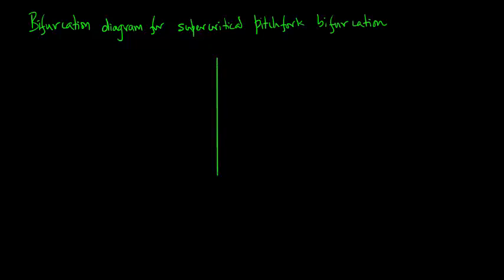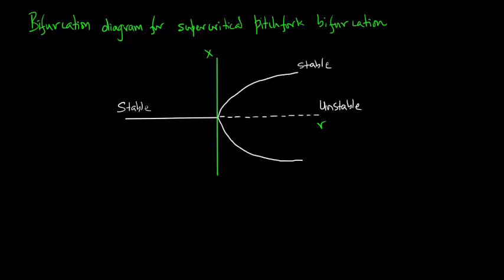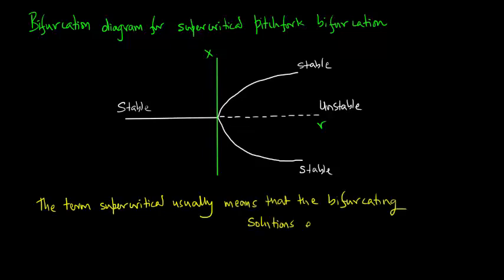Now let us consider the bifurcation diagram for a supercritical pitchfork bifurcation. As is the norm we go ahead and plot x versus r. The straight line is stable and the dashed line is unstable. That is stable and that is another stable branch. The term supercritical usually means that the bifurcating solutions themselves are stable.